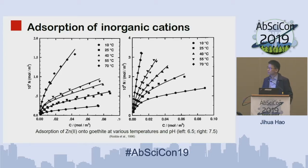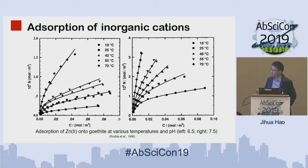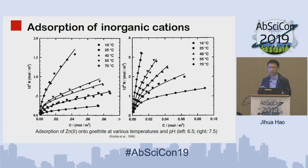This is a study about the absorption of zinc onto goethite at various temperatures between 10°C and 70°C and two pH values. The left is more acidic and the right is more alkaline. In both cases, increasing temperature greatly elevates the absorption of zinc onto goethite. This is mainly because absorption of zinc onto goethite is endothermic, so increasing temperature favors the absorption equilibrium toward more absorption.